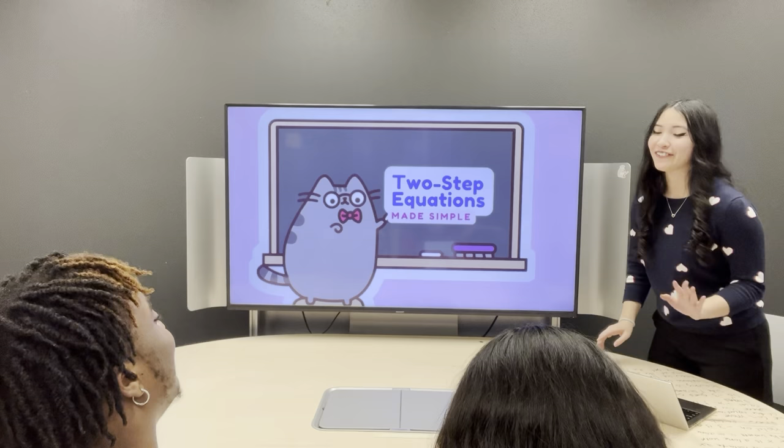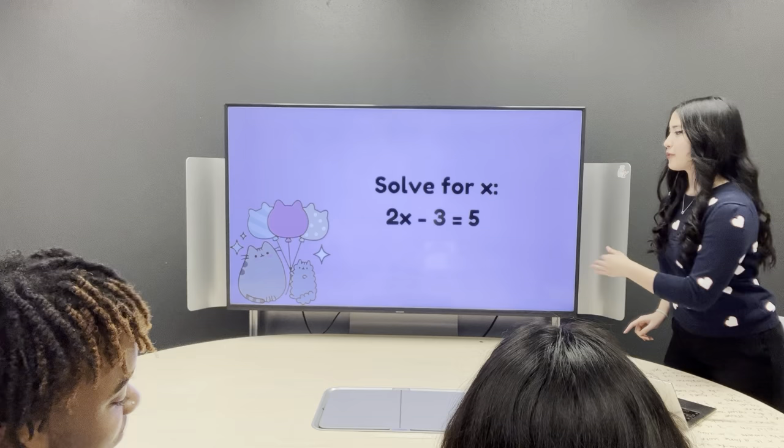So, could you start us off and read the equation for us, please? Solve for x: 2x minus 3 equals 5. Okay, good.